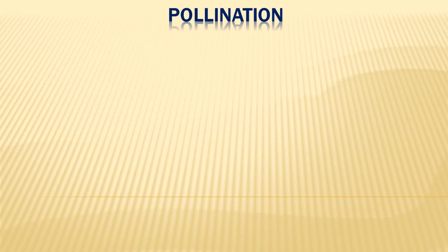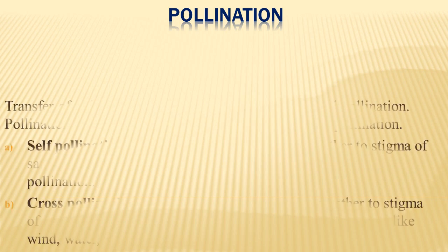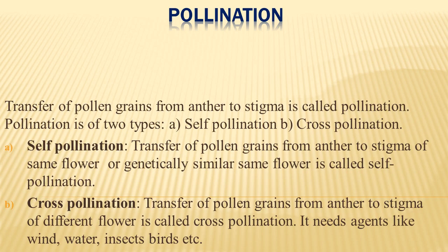During reproduction in plants, another important event that takes place is pollination. Pollination is the transfer of pollen grains from anther to stigma. Pollination is of two categories: self-pollination and cross-pollination. Self-pollination is the transfer of pollen grains from anther to stigma of the same flower or a genetically similar flower. Cross-pollination is the transfer of pollen grains from anther to stigma of a different flower, and it requires agents like wind, water, and insects.